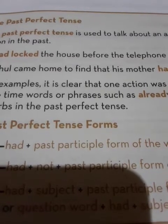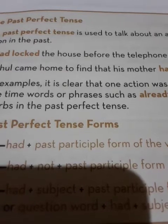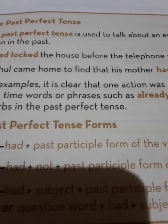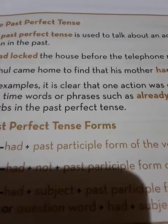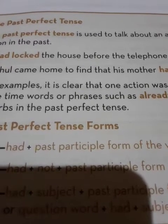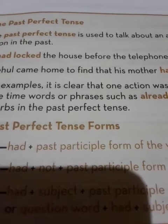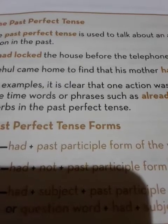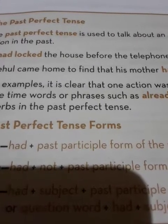Rule 3: in case of past perfect tense, if the sentence is given in question form or interrogative form, then 'had' plus subject plus third form of the verb is added. Or, question word plus 'had' plus subject plus third form of the verb is added. For example, number 1: had I spoken to you? Number 2: had they eaten their lunch? Other examples — number 1: what had my mother cooked for lunch? Number 2: what had she written in her diary?